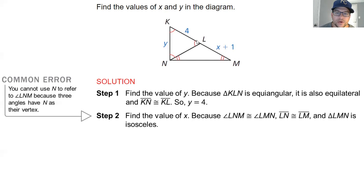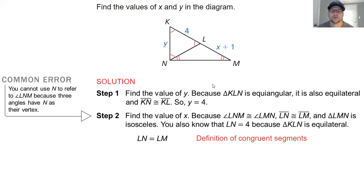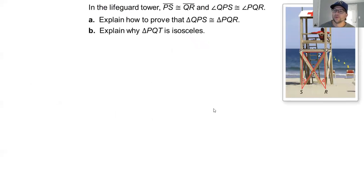And since your X plus 1 is on this LN, which is also part of this equilateral triangle, all three of these sides are the same. So X plus 1 is going to be the same distance as your 4. So you're going to set X plus 1 equal to 4, substitute those parts in, subtract 1 on both sides, and you get X equals 3. So your two values are X equals 3 and Y equals 4.